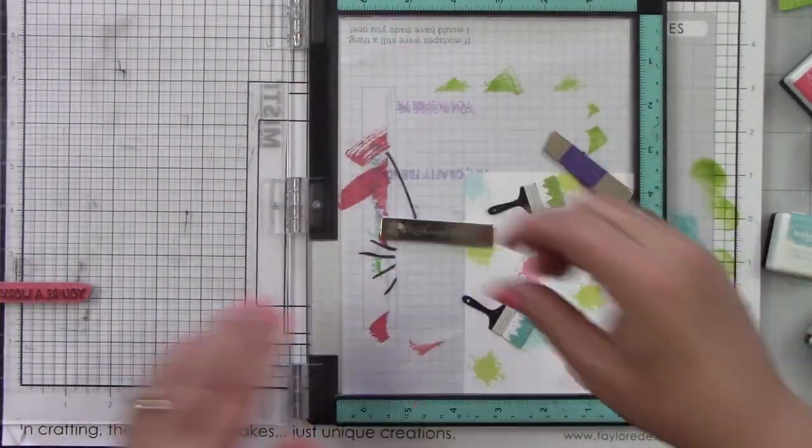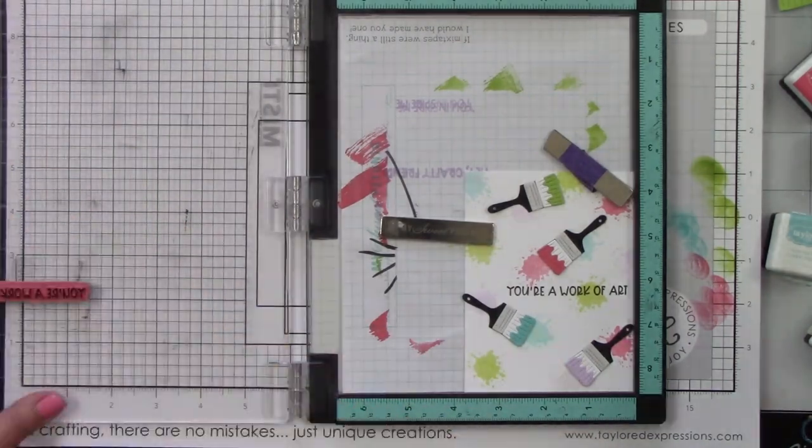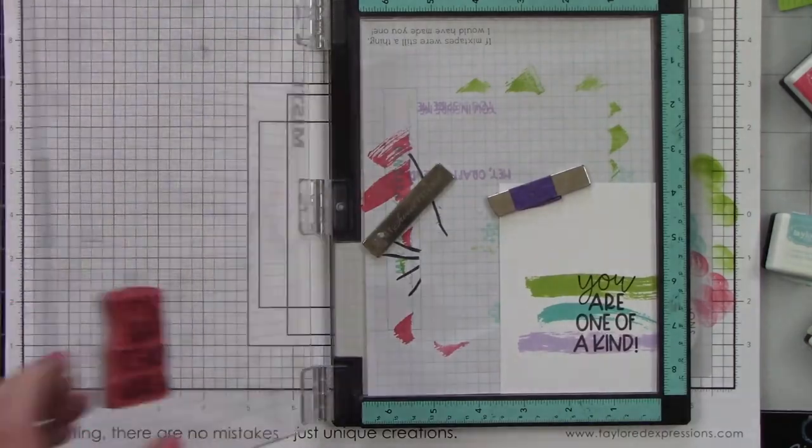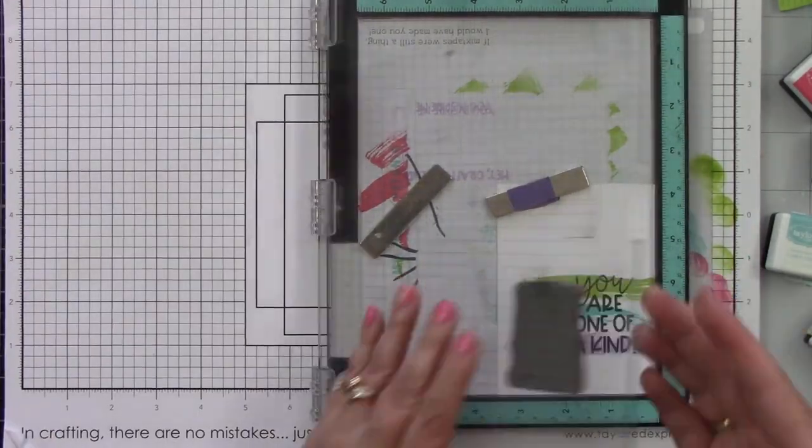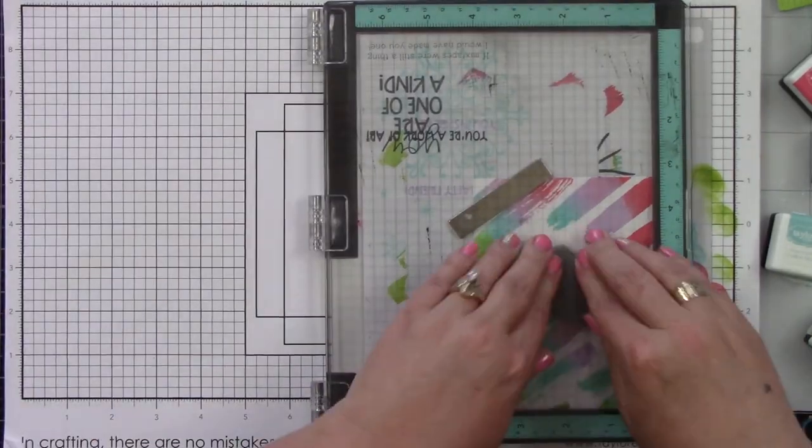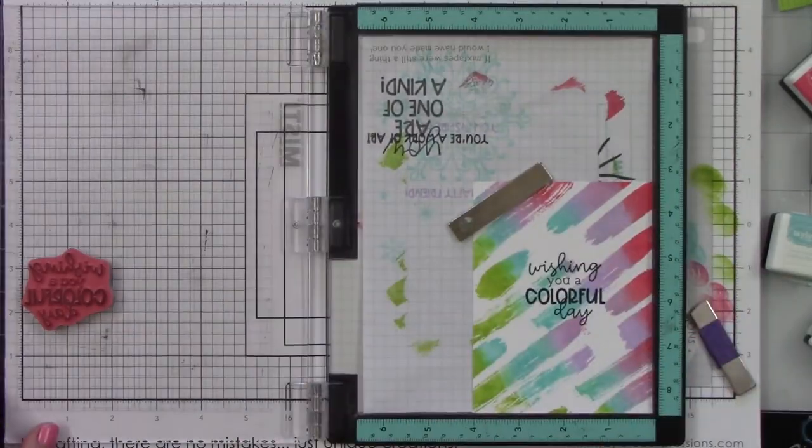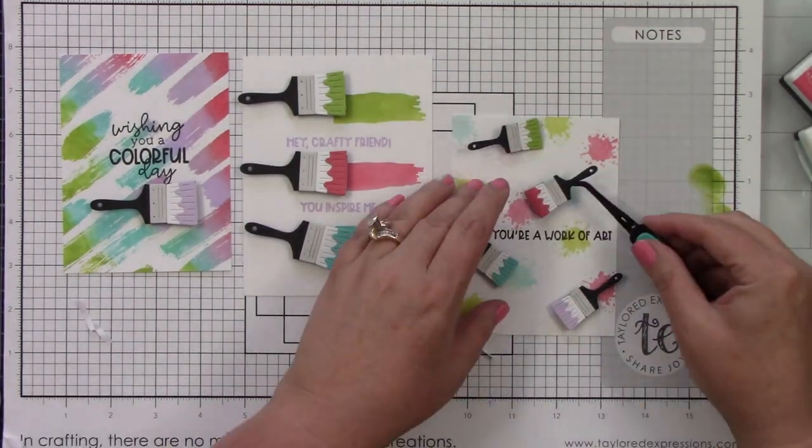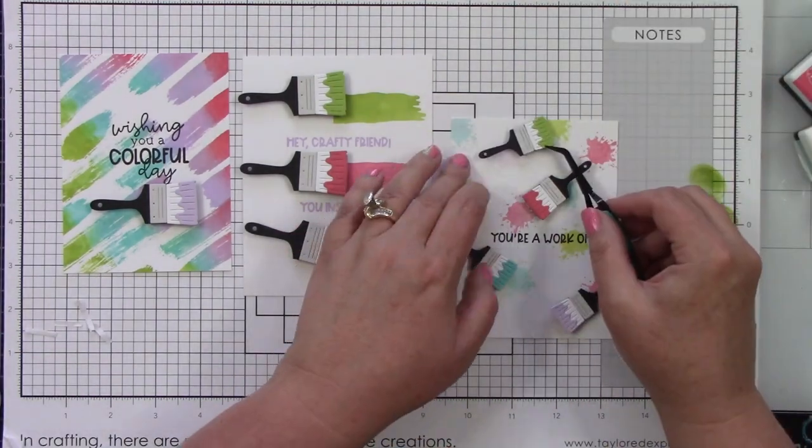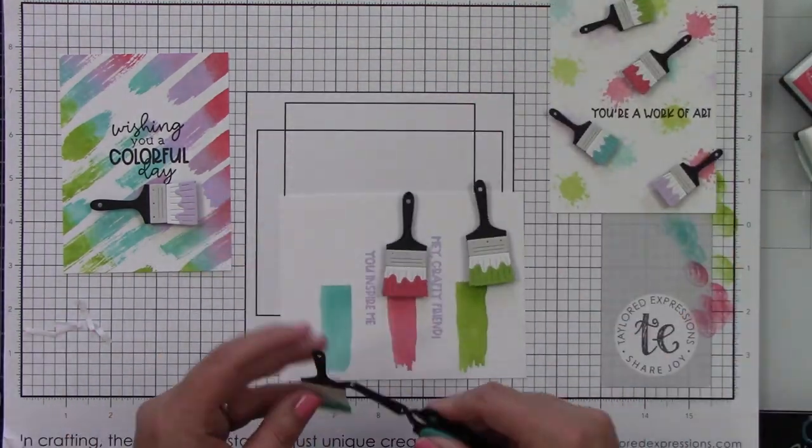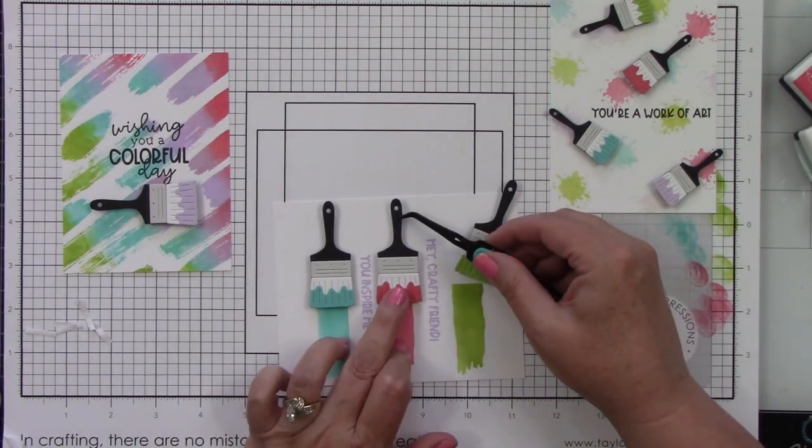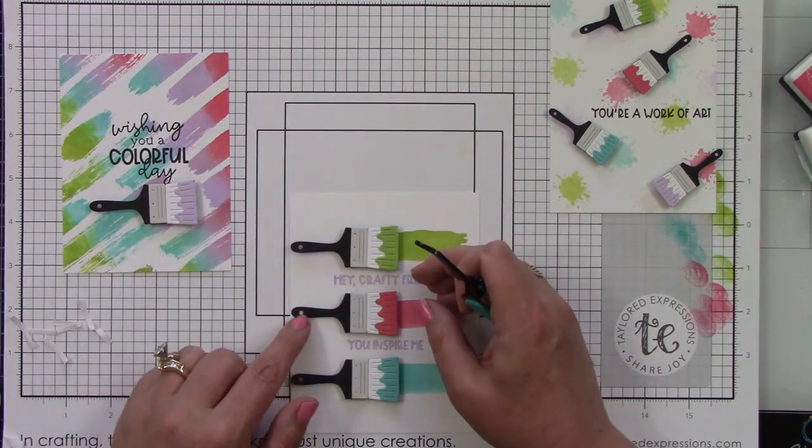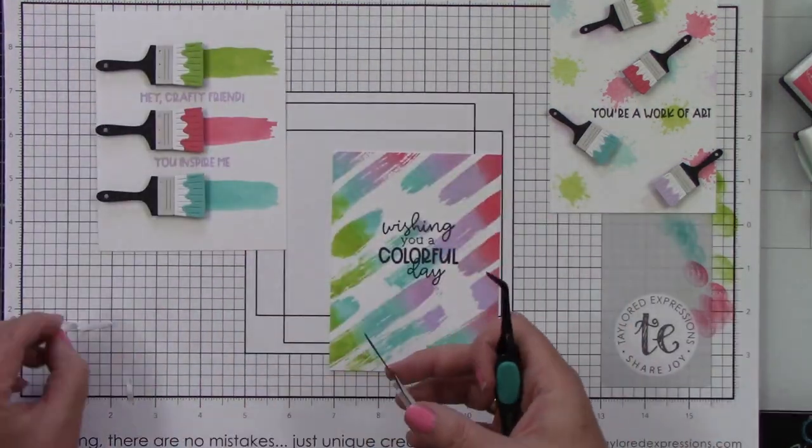I will trim that down quite a bit smaller. I need to stamp my sentiment that says 'You're a work of art.' This sentiment says 'You are one of a kind.' I'm stamping that over our little brush strokes. This one's going to say 'Wishing you a colorful day,' which I think is so cute. Now we can start putting these together. I've already have these trimmed down as small as I need. The card panel, some of them are full size, some of them are trimmed down a little bit smaller than an A2 size. I have foam sticky strips behind all of my paint brushes.